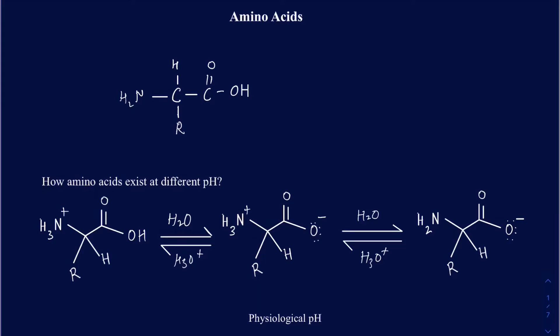Hey guys, in this video we're going to be talking about the general structure of amino acids and the different forms of amino acids that exist in different pHs. So let's start out with the general structure. As the name specifies, it must have an amine group and an acid group. That's why they're called amino acids.